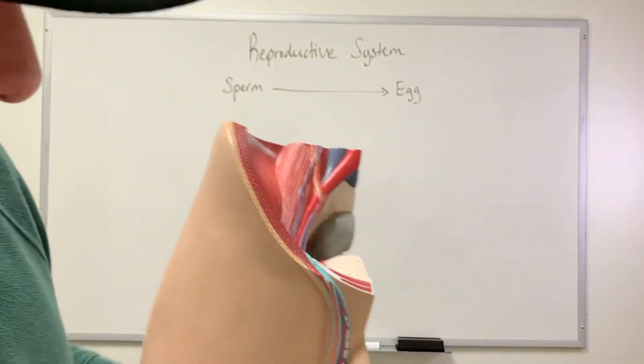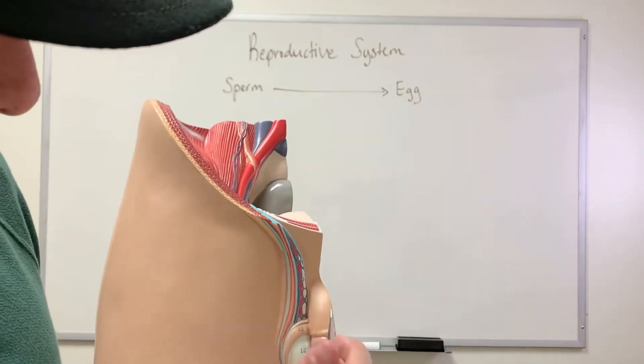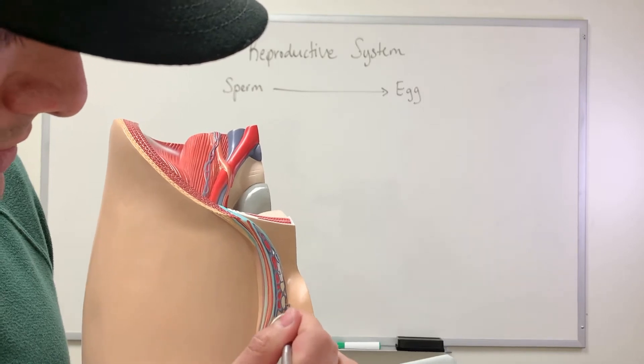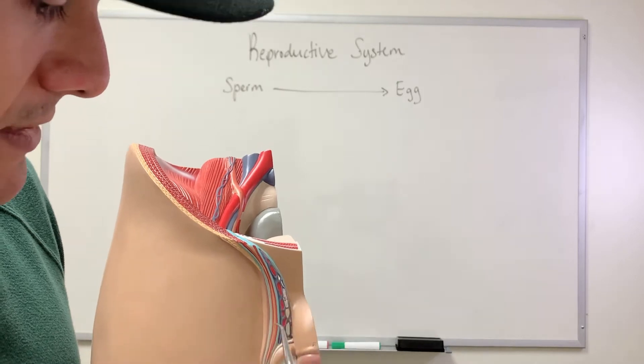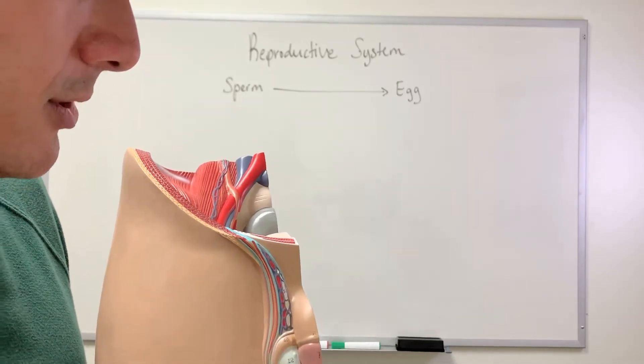So I also have it here shown in the male model. So testes, and then this here is the epididymis. So the epididymis is here, and then if you follow the white structure here, this is the vas deferens. Okay, so we're going to show it on the other model.